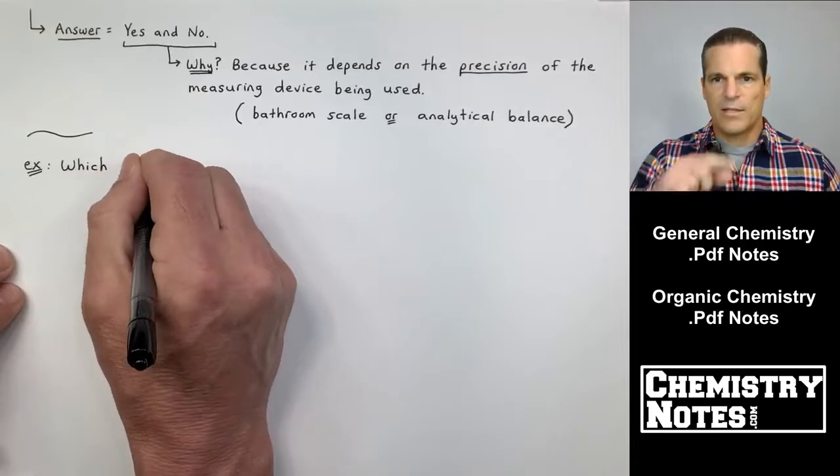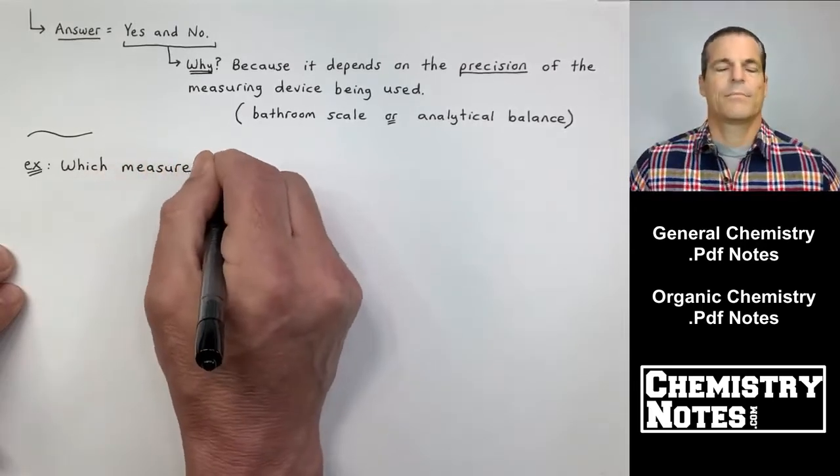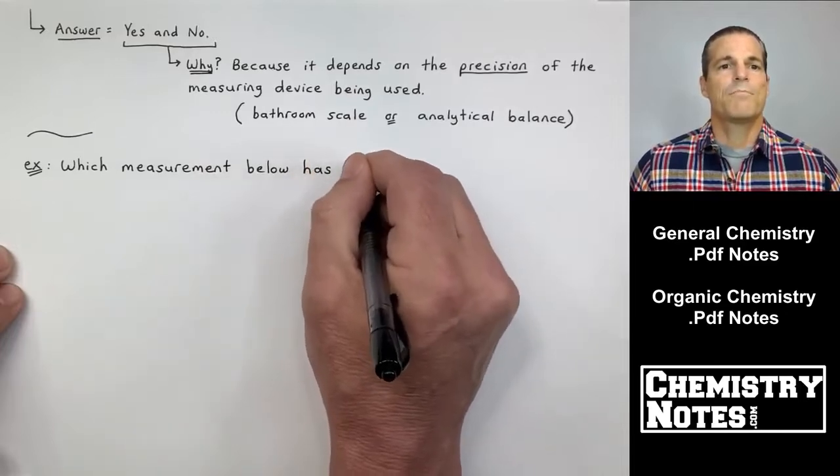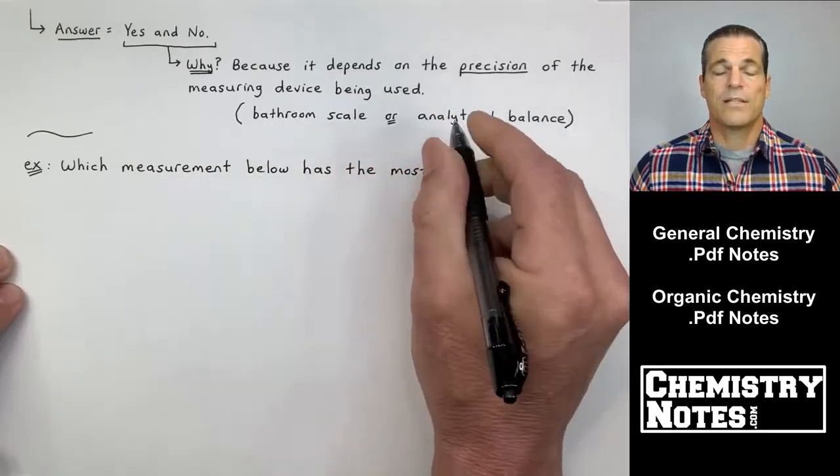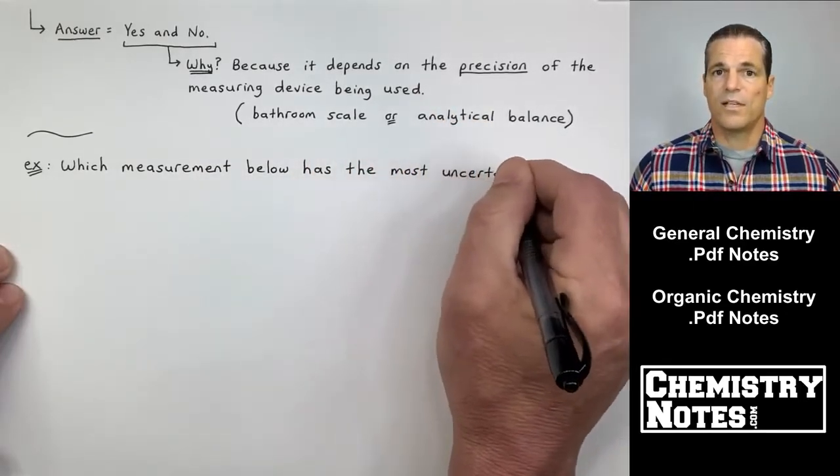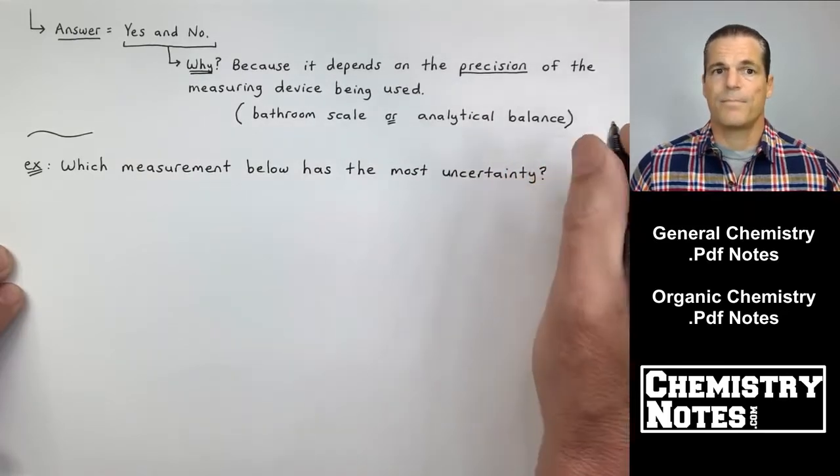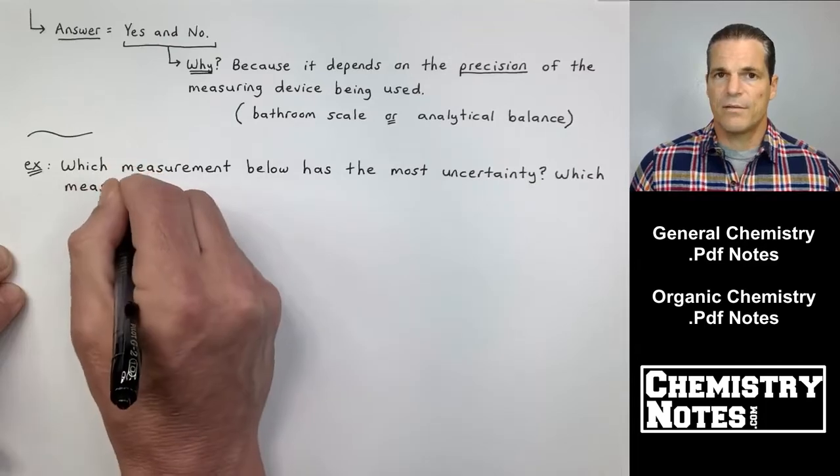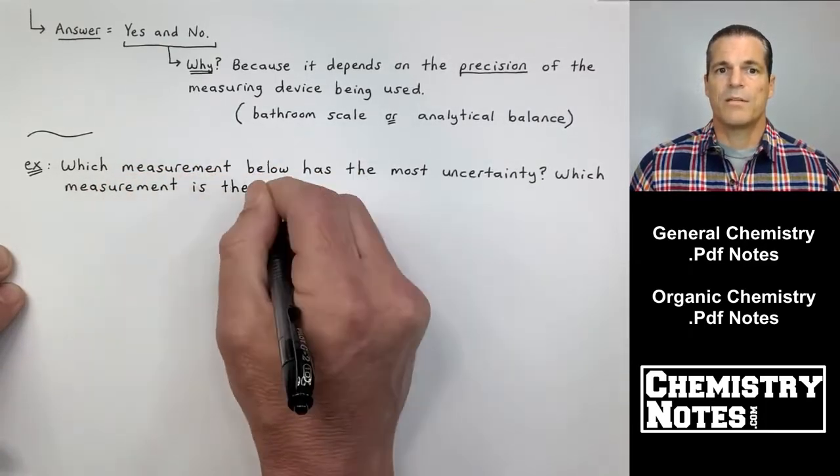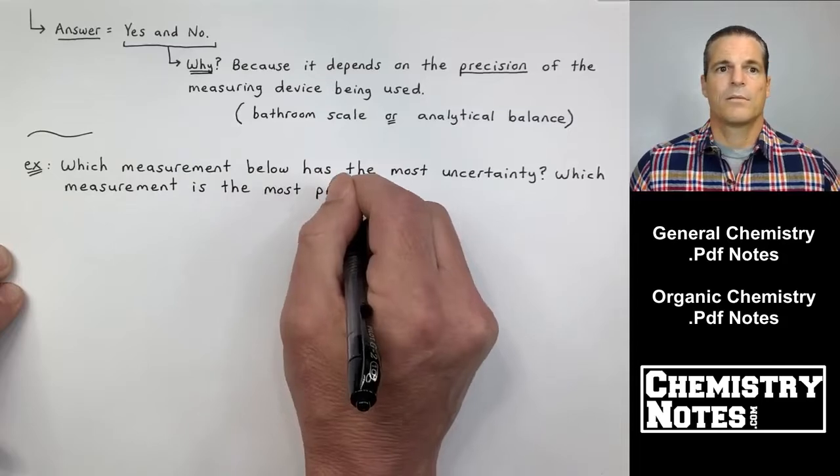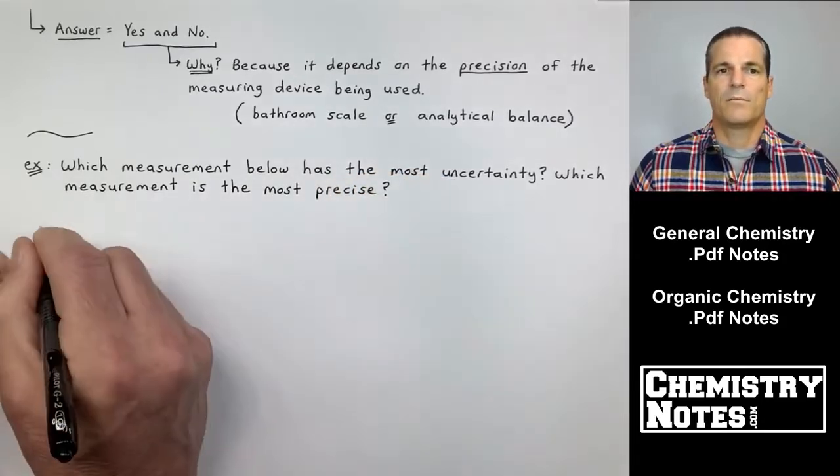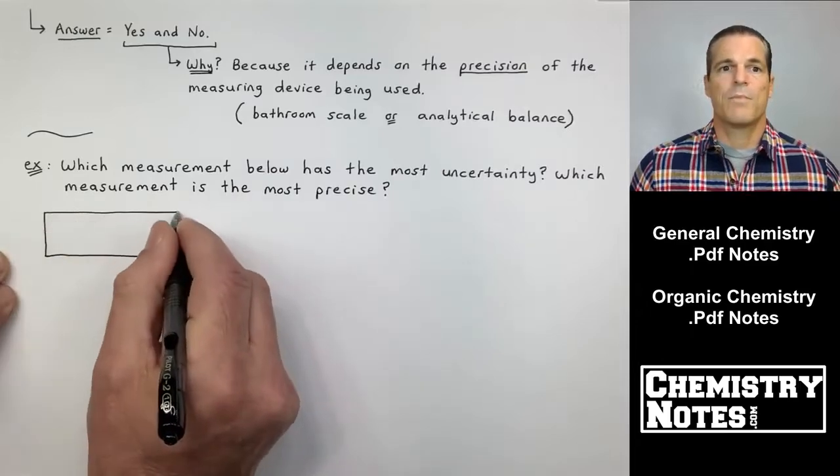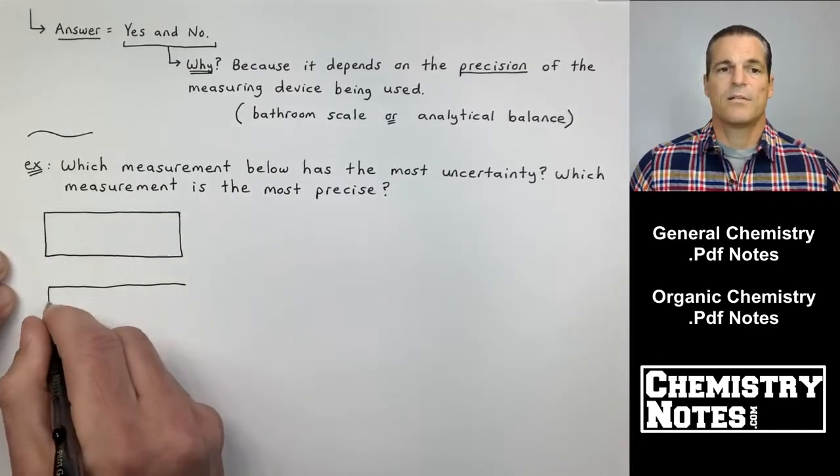All right. I got that little squiggly line there, which means I'm doing a different example now. It says, which measurement below has the most uncertainty associated with it? Which measurement is the most precise? Now, give me some time here as I sketch these two rulers.